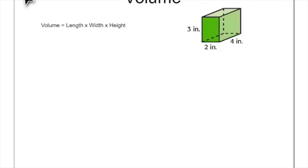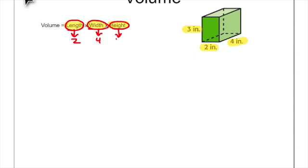There's more than one way to find volume. You can also find volume by taking length times width times height — which is exactly the same thing, but without separately finding the area of the base. Here we have a rectangular prism with a length of 2 inches, a width of 4 inches, and a height of 3 inches. Replace the variables: 2 times 4 is 8, and 8 times 3 is 24, so the volume is 24 inches cubed.